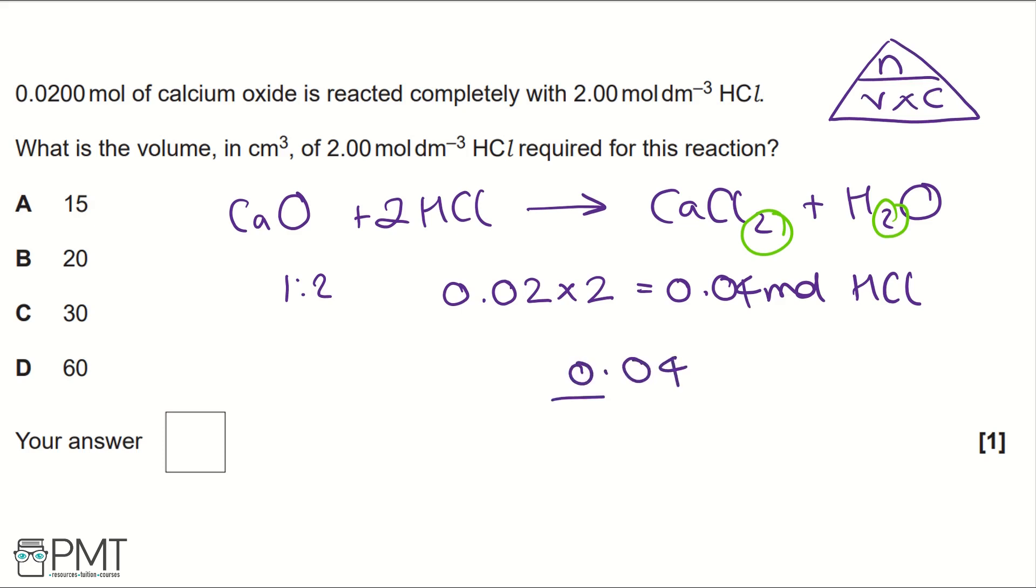We take the moles and we divide by the concentration of 2 moles per decimetre cubed that gives us 0.02 decimetre cubed of hydrochloric acid.